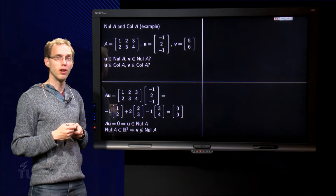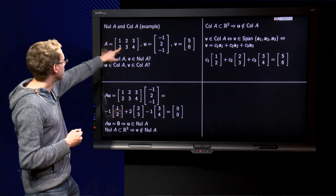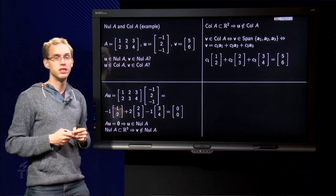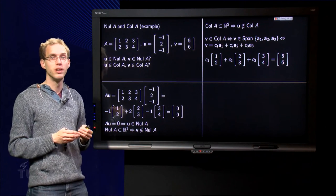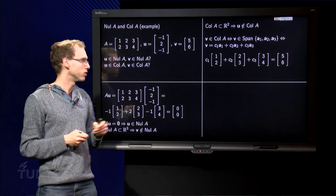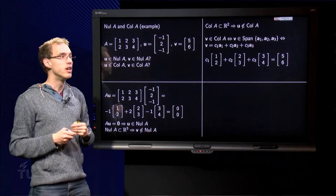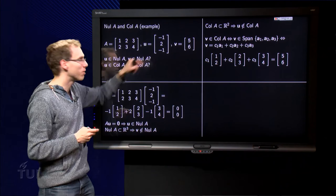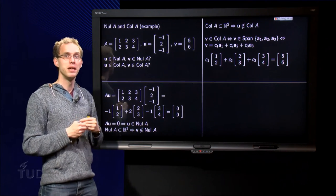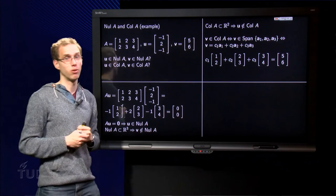Let us look into the column space now. Well, the column space is the set of all linear combinations of the columns of A. So the column space is a subset of R^2, because you find them making linear combinations of the columns which have only two components. So Col A is a subset of R^2. u, however, has three components and is in R^3, so u can never be in the column space of A because it has too many components. So u is not in the column space of A.